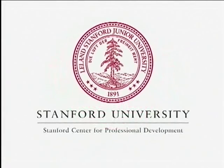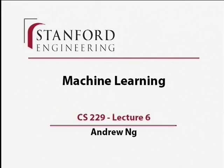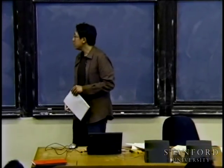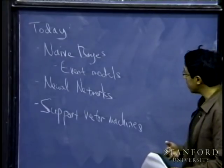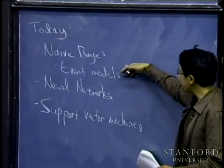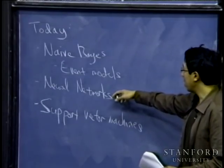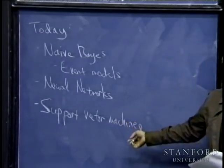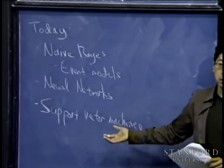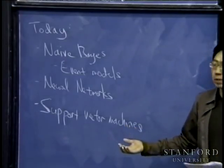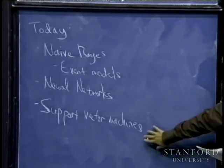This presentation is delivered by the Stanford Center for Professional Development. Today I want to continue our discussion of Naive Bayes, which I started in the previous lecture, and talk about a couple of different event models. Then I'll take a brief digression to talk about neural networks, and then I want to start discussing support vector machines—the supervised learning algorithm that many people consider the most effective off-the-shelf supervised learning algorithm. We'll start discussing that today, and this will take us a few lectures to complete.